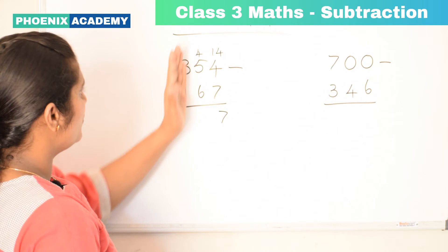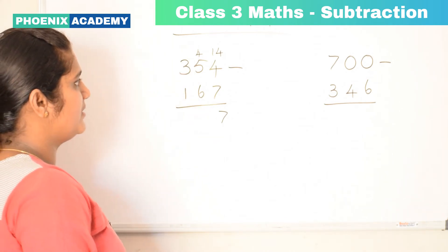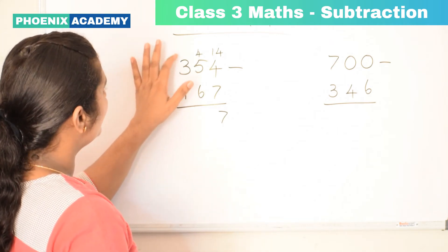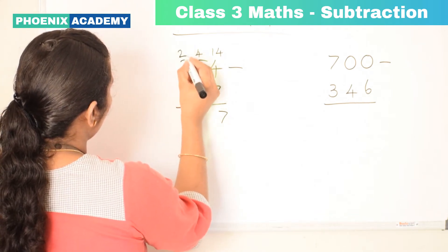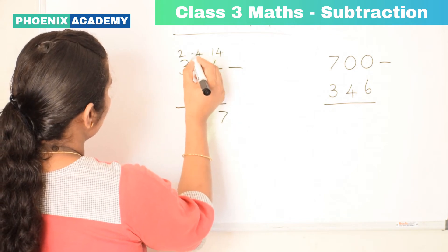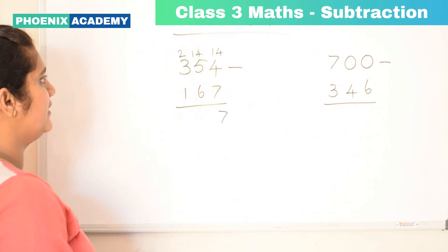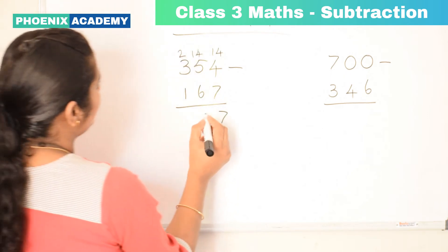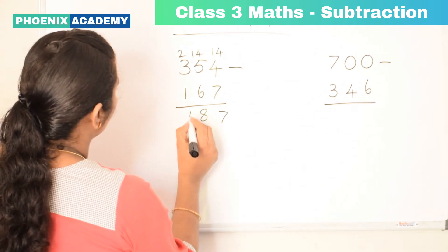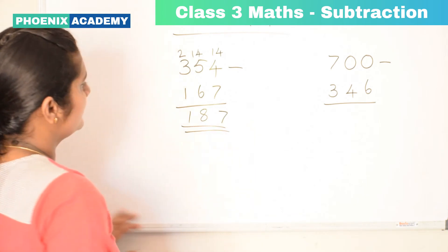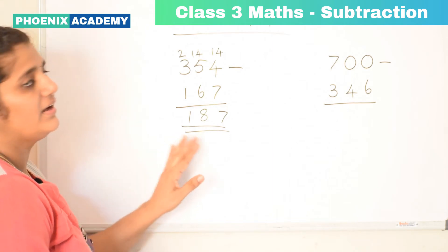Then we subtract 4 minus 6 in the tens place. This is also not possible because 6 is a bigger number, so we borrow 1 from the hundreds place. This 300 becomes 2 hundreds and 4 tens becomes 14 tens. Then we subtract 6 from 14: 14 minus 6 is 8. Then 2 minus 1 is 1. So 354 minus 167 is 187.